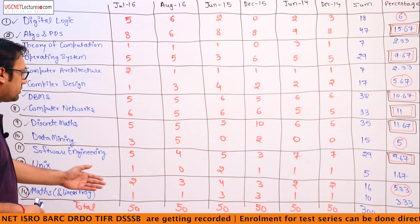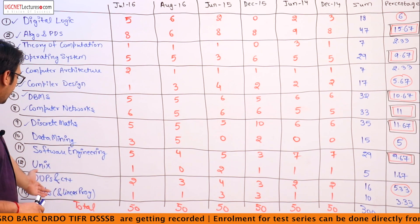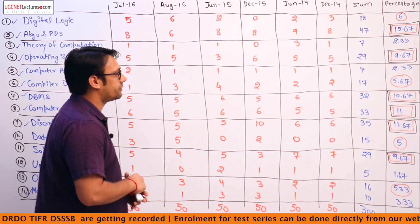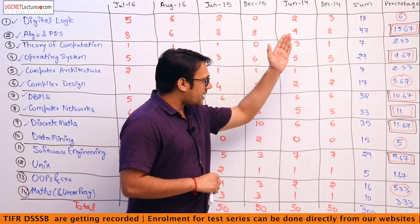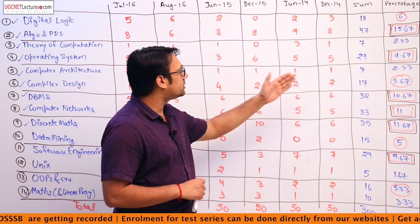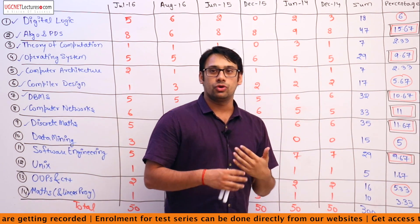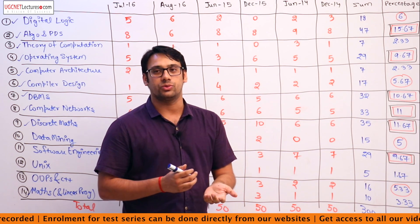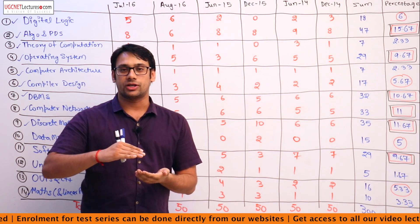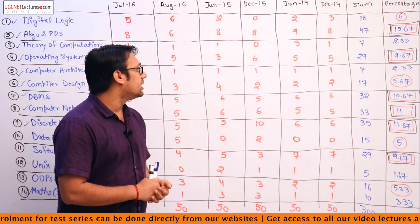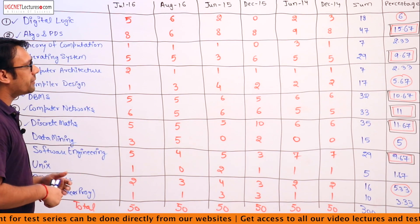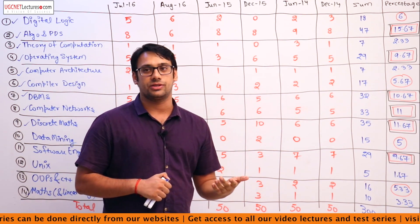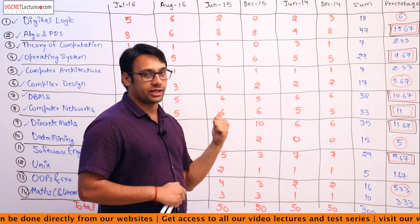Software engineering covers around 29 questions, UNIX covers 5 questions, and OOPS and C++ covers 16 questions. In this analysis, the subjects having more than 10% importance are: programming and data structures at approximately 15.67%, operating system at around 9.67%, and DBMS at 10.67%.